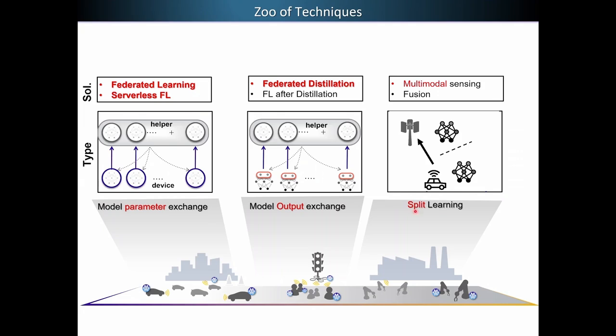We came up with this idea of federated distillation that I'm going to present to you very shortly. And another type of edge AI technique called split learning, where, as the name suggests, you split a neural network into multiple segments and you carry out the inference jointly between these devices.